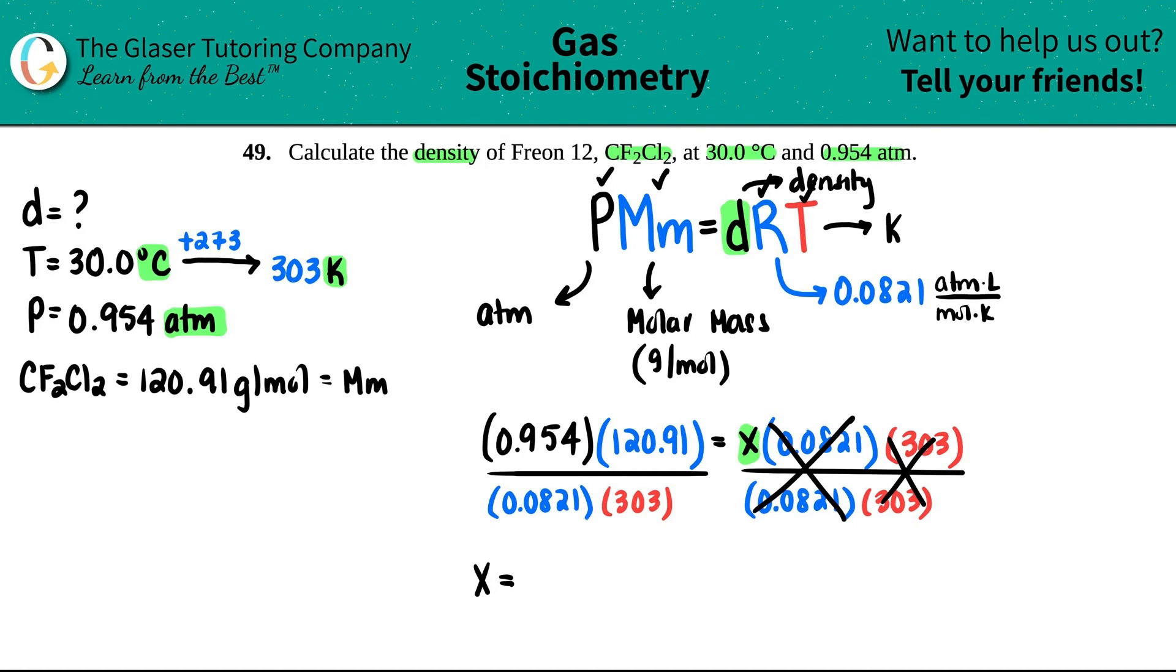So X equals 0.954 times 120.91 divided by 0.0821, then divide again by 303. And now I look back and I see that I have three sig figs. So my answer should have three sig figs. Does anybody really care? No, but just in case, you know, we still got to put that into good practice. So 4.64, and now the units for the density, remember, the density is always a mass divided by a volume.